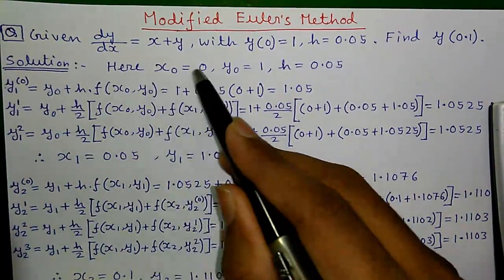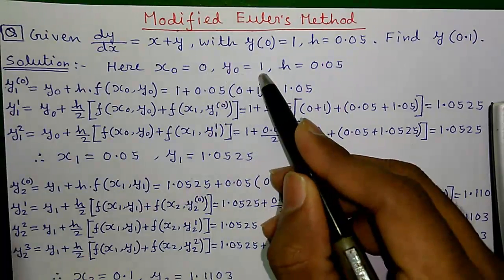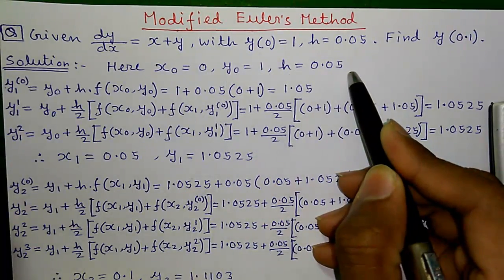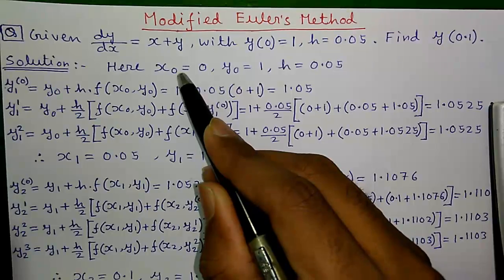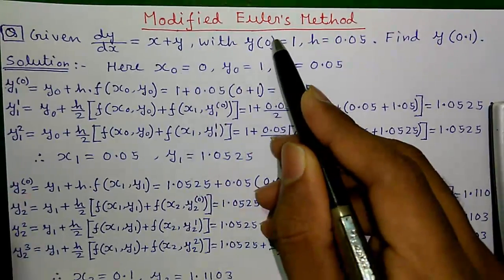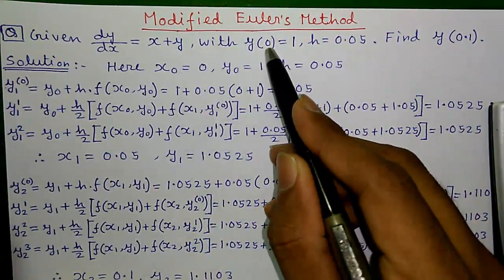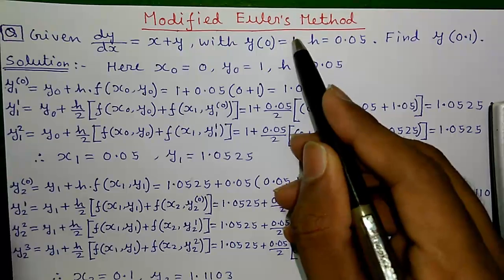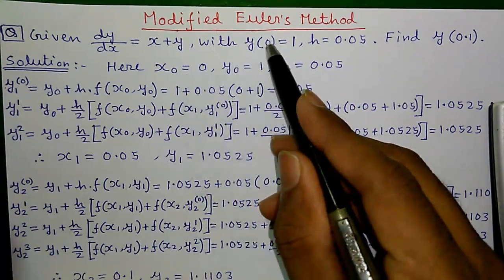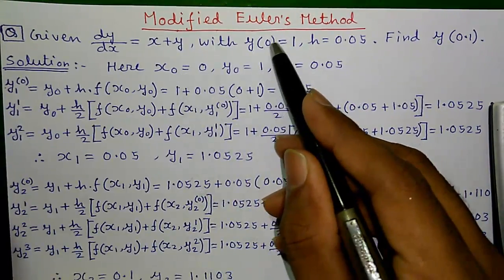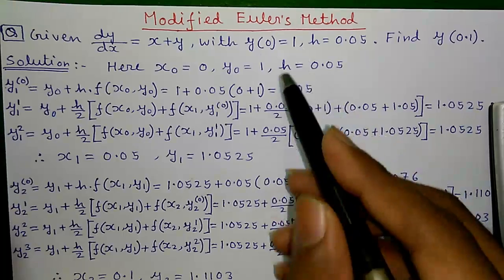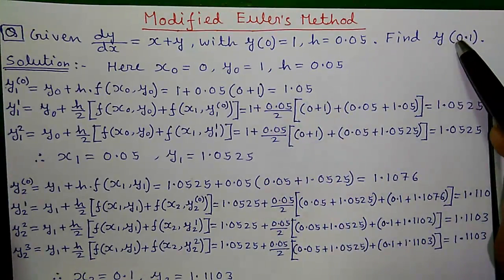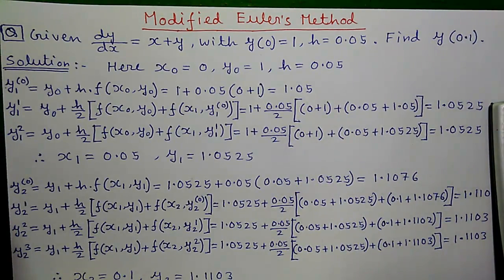Here x0 equals 0, y0 equals 1, and h equals 0.05. The x0 value comes from inside the bracket and y0 value is 1. That means for x equals 0, y equals 1. We have to find out the value of y for x equals 0.1.